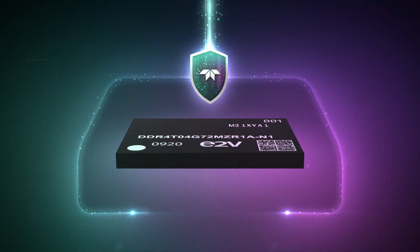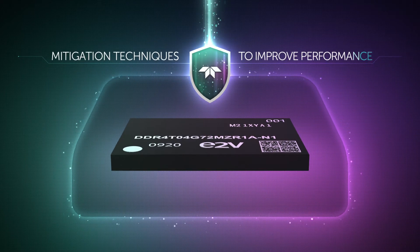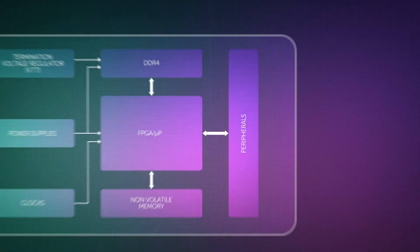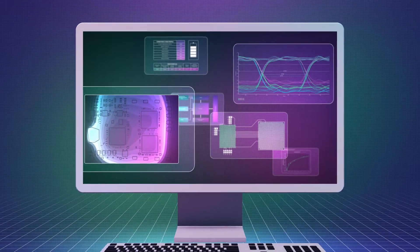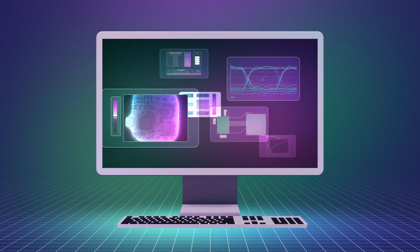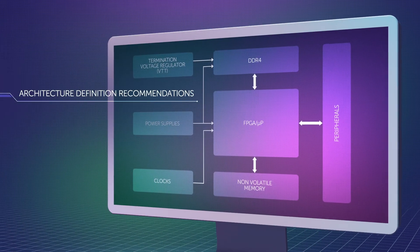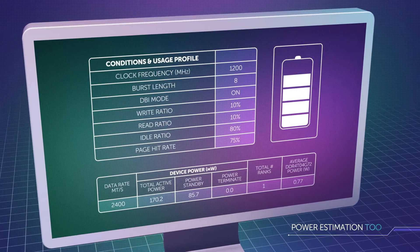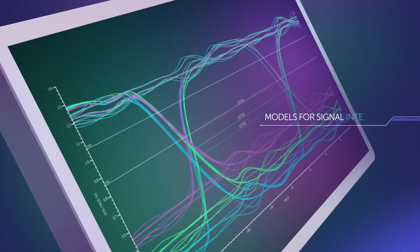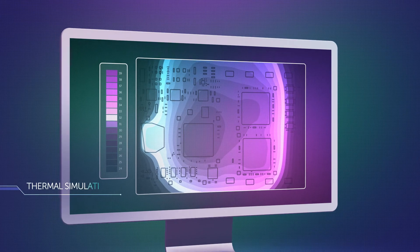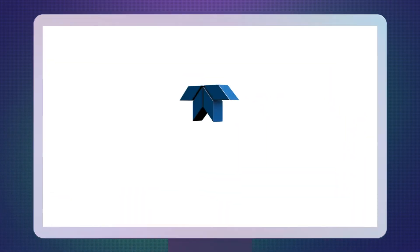Teledyne E2V also offers mitigation techniques to improve performance. The memory comes with an extensive range of documentation and material on thermal performance, power usage, and more to help designers, including architecture definition recommendations, power estimation tools, guidelines for schematics and layout, and models for signal integrity and thermal simulations.